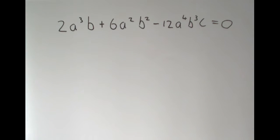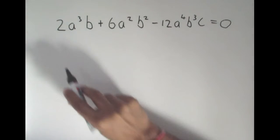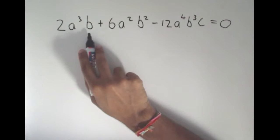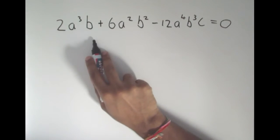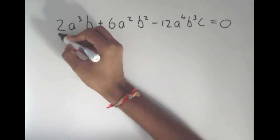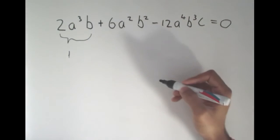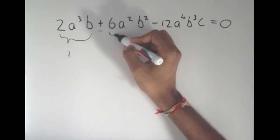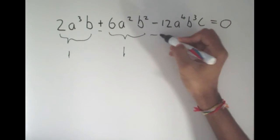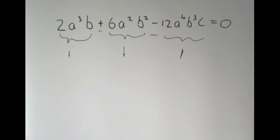Let's look at this example: 2a³b + 6a²b² − 12a⁴b³c = 0. Here we have 2 × a³ × b, which is all attached by multiplication, so this is one term. Then a separator, and the next part is one term. Another separator, and this is one term. So we have three terms in this case.